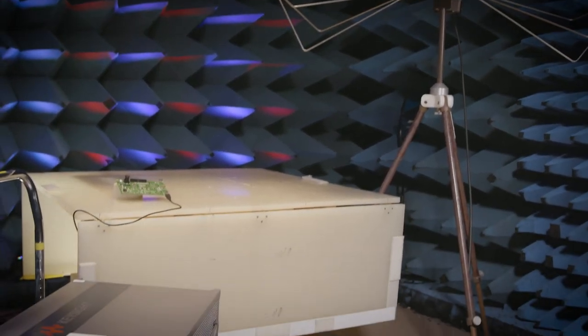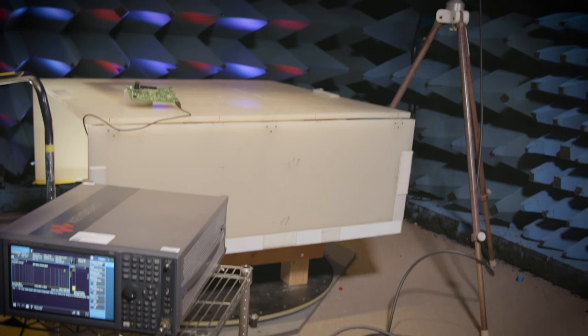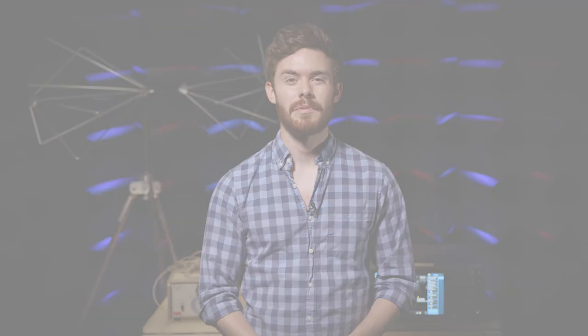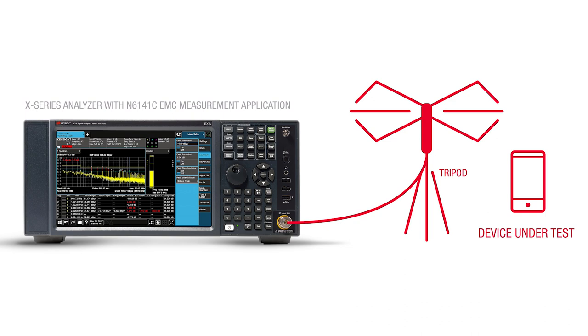Here's what our radiated emissions test setup looks like. You'll need a large area away from other electronic equipment to avoid electromagnetic interference that can disrupt your testing and lead to inaccurate results. Most commonly, your device will be placed at a distance of three meters away from the antenna, which is connected to the EMI receiver or spectrum analyzer outside the chamber. Stay tuned for the next episode of the ABCs of EMC series where we'll perform an EMC pre-compliance test on our device.